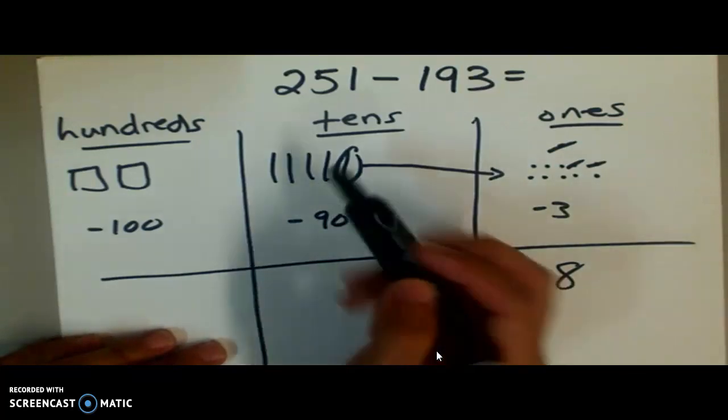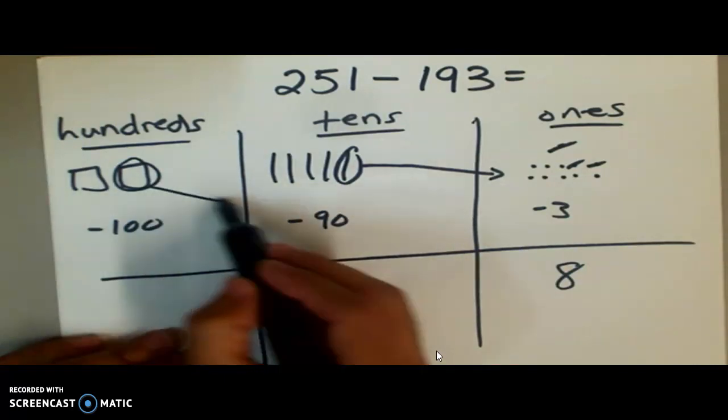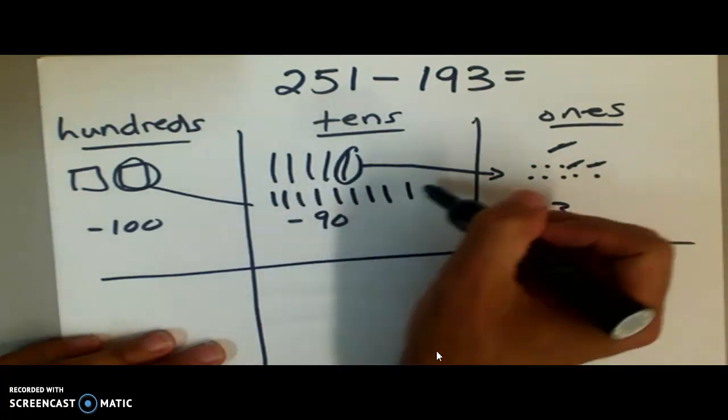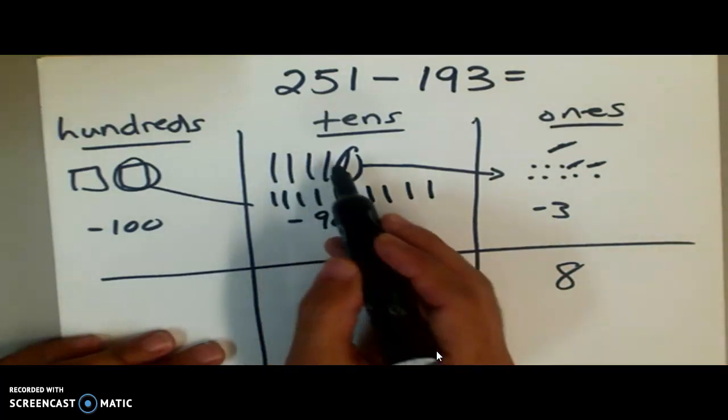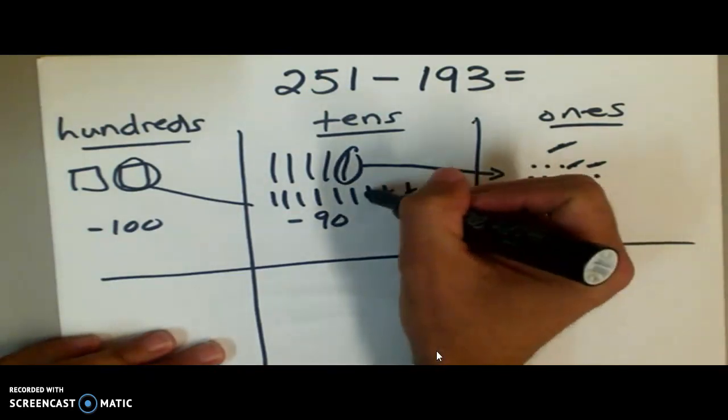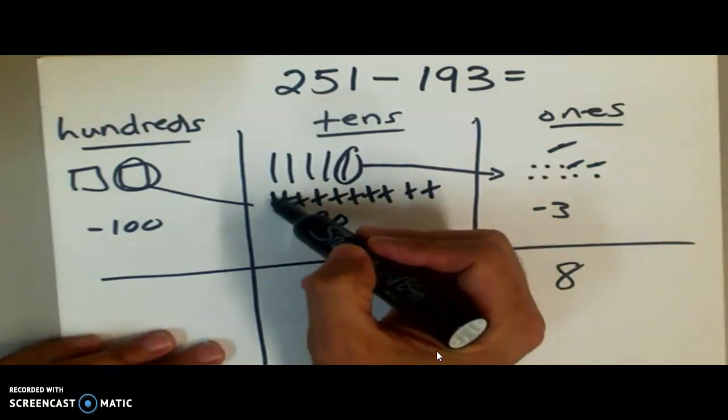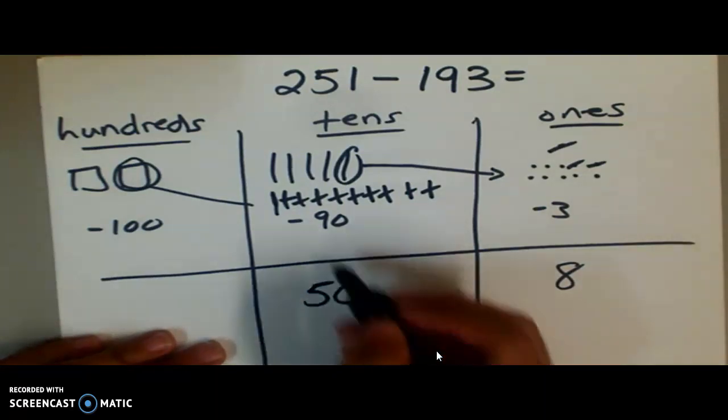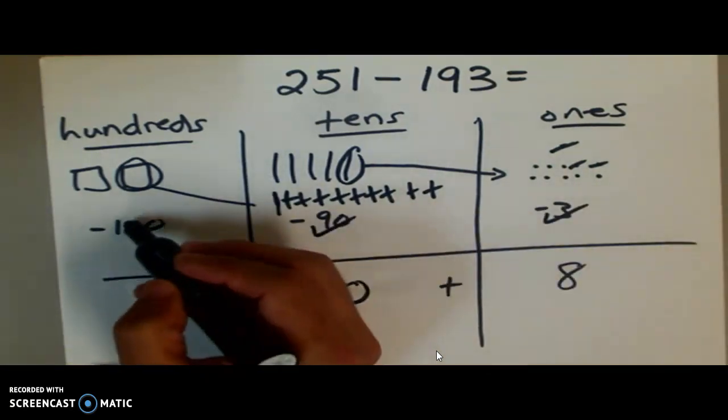Over here you can see that we're supposed to take away 90, but we do not have 90. So we're going to go over here and we're going to regroup this 100 into 10 tens: 1, 2, 3, 4, 5, 6, 7, 8, 9, 10. Now we have 10, 11, 12, we have 14 tens. We can certainly take away 90. Let's take away 10, 20, 30, 40, 50, 60, 70, 80, 90. That leaves us with 1, 2, 3, 4, 5 tens.